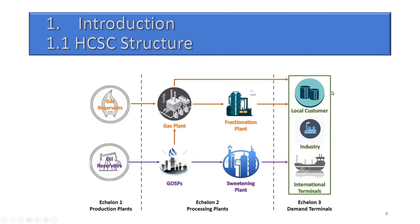What is the hydrocarbon supply chain? It is simply an integration between four different supply chains: the crude oil supply chain, crude oil product supply chain, natural gas supply chain, and natural gas product supply chain. In this work, we focus on three: crude oil, natural gas, and natural gas products. As shown in the schematic representation, it starts from gas and oil reservoirs representing the extraction and production of oil and gas.